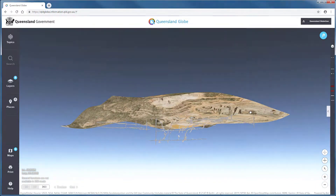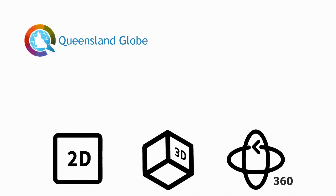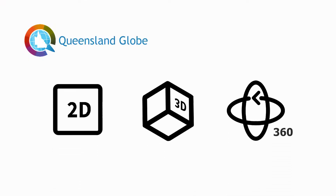We can distinguish which data layers can be viewed in 2D, 3D and 360 mode by the following icons.